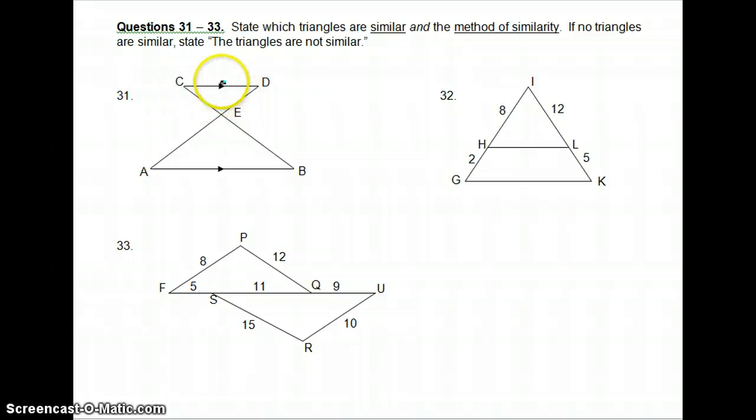On this first one here, we've got parallel lines, so that tells us that alternate interior angles are congruent. I think we could just do that because we only need two angles. So we have those, so now we just need to match them up.